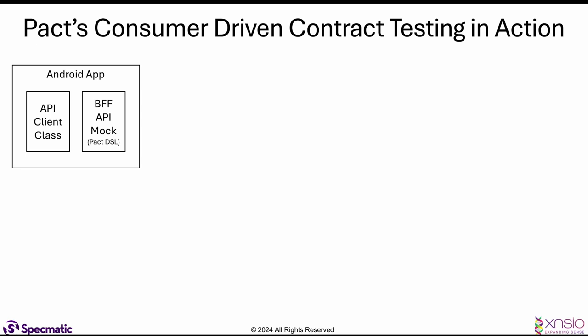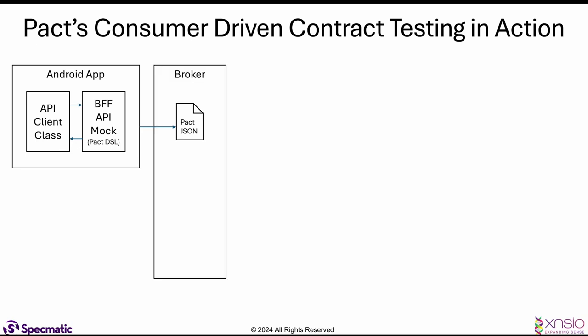As a result of unit tests hitting the API client class, it would interact with the BFF API mock, and that would result in the PACT JSON being generated. Now where do we put the PACT JSON? That would be the PACT broker. This is problem number two — the PACT broker is an independent server that we need to deploy, and it is the central piece through which all PACT JSONs are orchestrated.